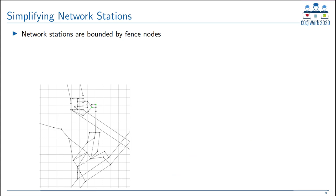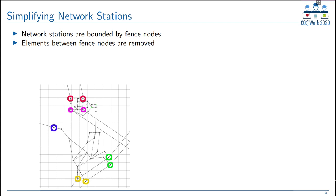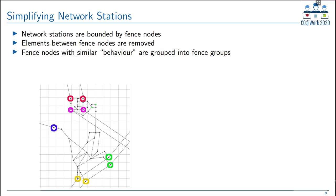Now I'll explain how we derive the simplified graph representations that replace the network stations. Here you can see a network station — the subgraph at the crossing of two major pipelines, containing many different elements and short pipes. First, we identify the fence nodes, which are the boundary nodes of the station. In this example, the fence nodes are circled. Then we remove all elements contained in the subgraph bounded by the fence nodes.